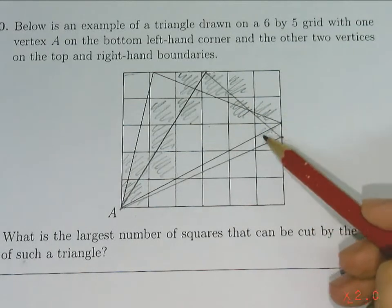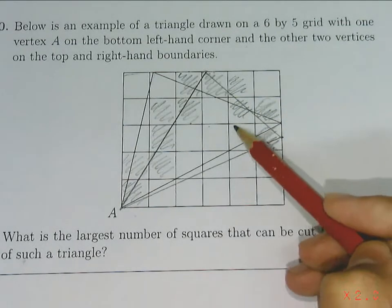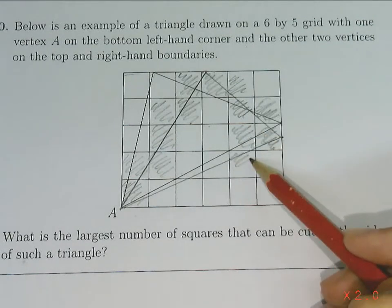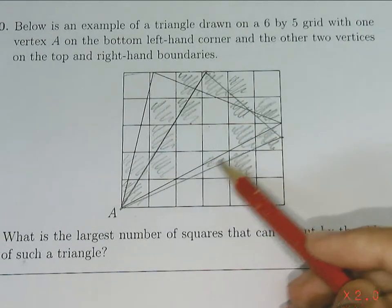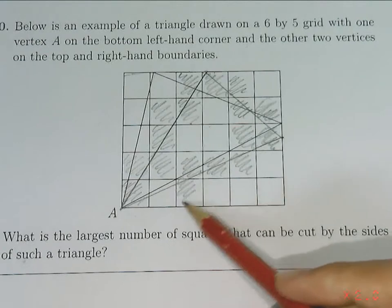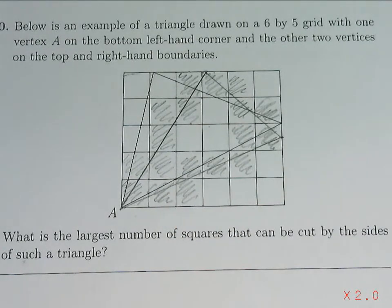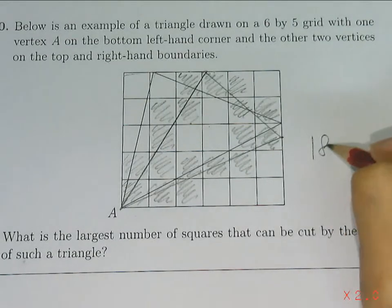Now I'll shade in the remaining sides so you can clearly see the number of squares which are cut. All the shaded squares are the squares cut by the sides of the triangle. Counting them, the largest number of squares is 18, so our answer is 18.